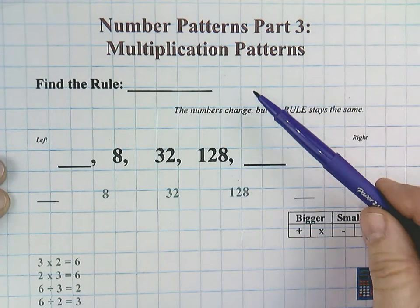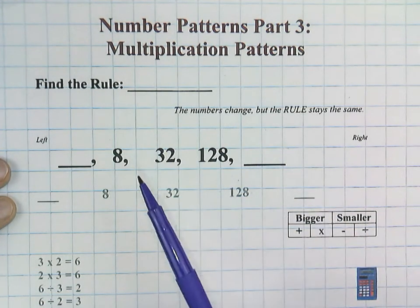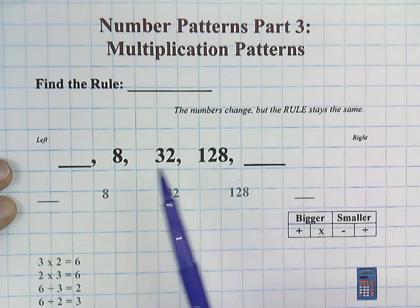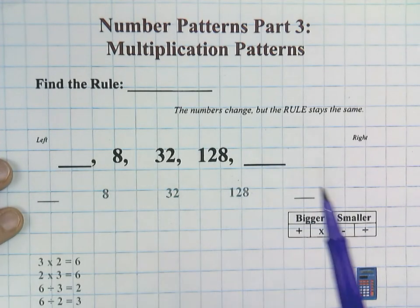All right. If you want, you can pause for a second. Give it a try. Okay. Find the rule: 8, 32, 128. And we'll notice that we have empty boxes we need to find on both the left and the right side.